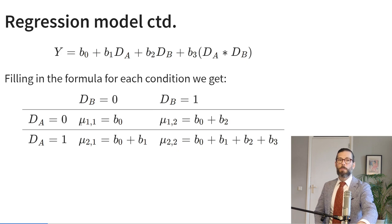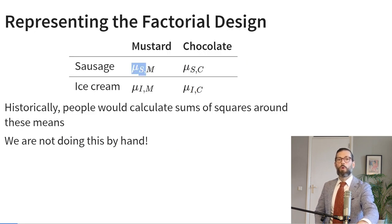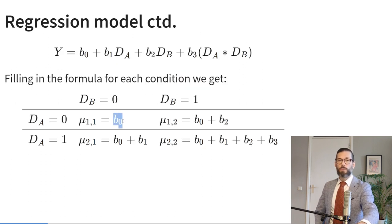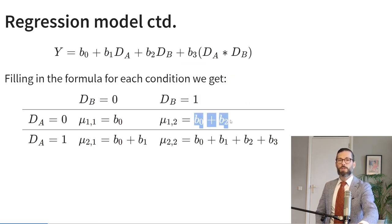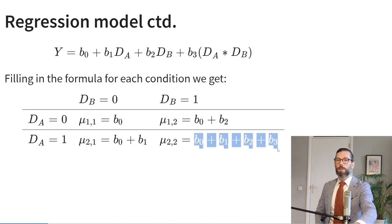Going back to the mean table for the two-by-two factorial design, we can fill in the formula for every cell. The mean for sausage with mustard equals b_0. The mean for sausage with chocolate equals b_0 plus b_2. The mean for ice cream with mustard equals b_0 plus b_1. And the mean for ice cream with chocolate equals b_0 plus b_1 plus b_2 plus b_3. So four parameters represent four group means exactly — every group can have a unique mean.